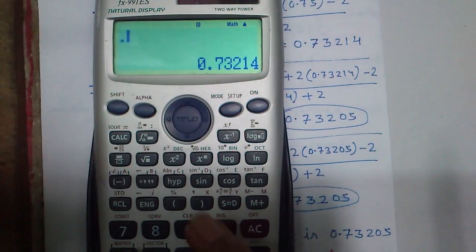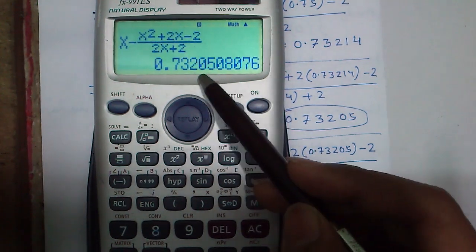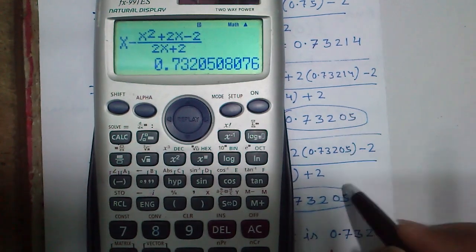So x equals 0.73205. So again we see 0.73205 has come. So we can say this is our required root. Hence the required positive root is 0.73205.